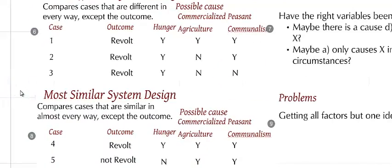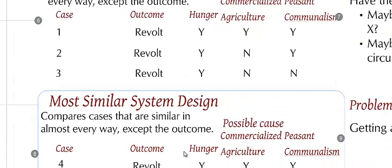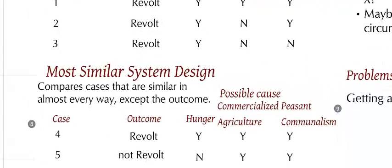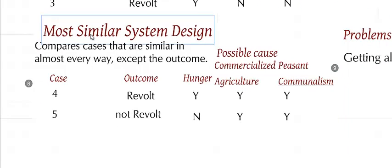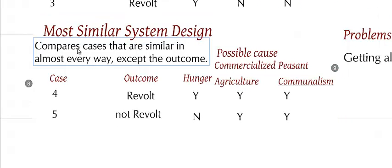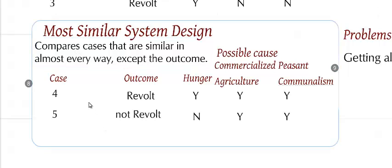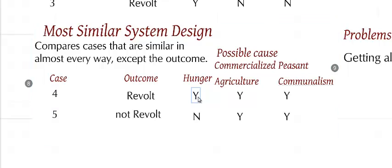The second classic way of comparative politics is the most similar system design, which we have right here. In this case, we compare cases that are similar in almost every way except the outcome. So it's the complete opposite of what we did in the last exercise. I've added case four and five here. In case four, it has hunger and commercialized agriculture and peasant communalism. Case five also has commercialized agriculture and peasant communalism, but it does not have hunger.